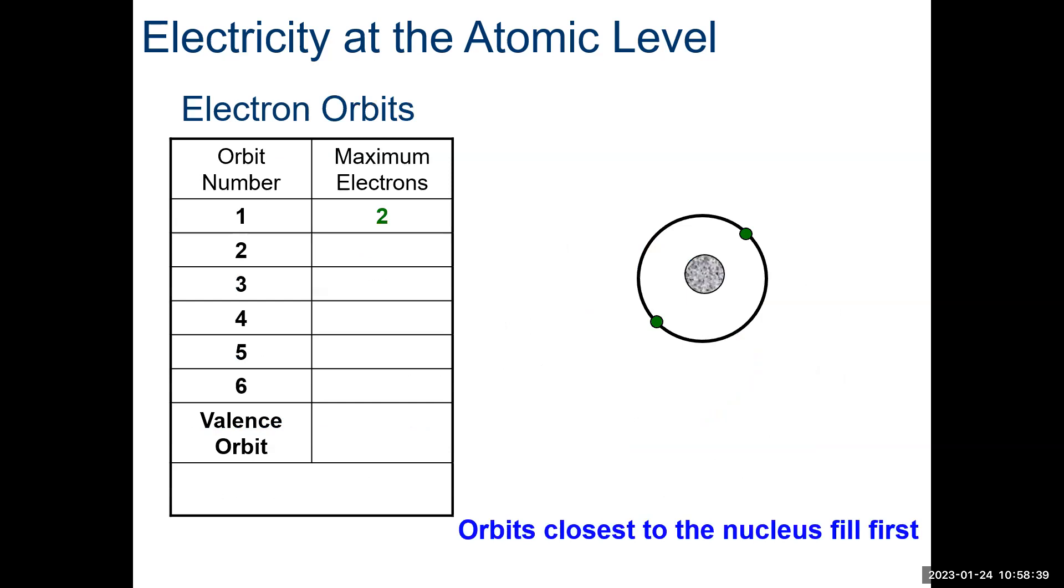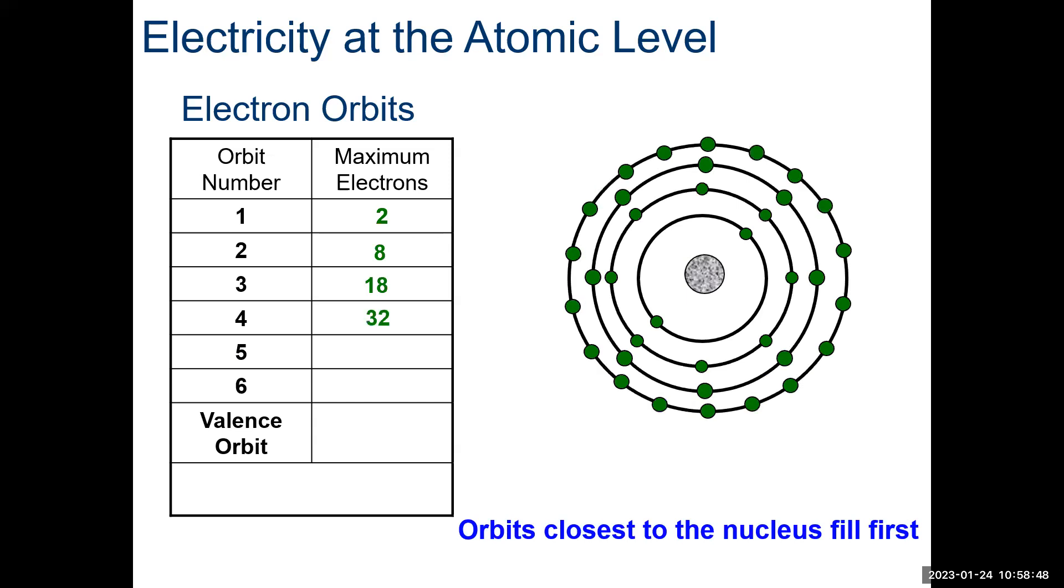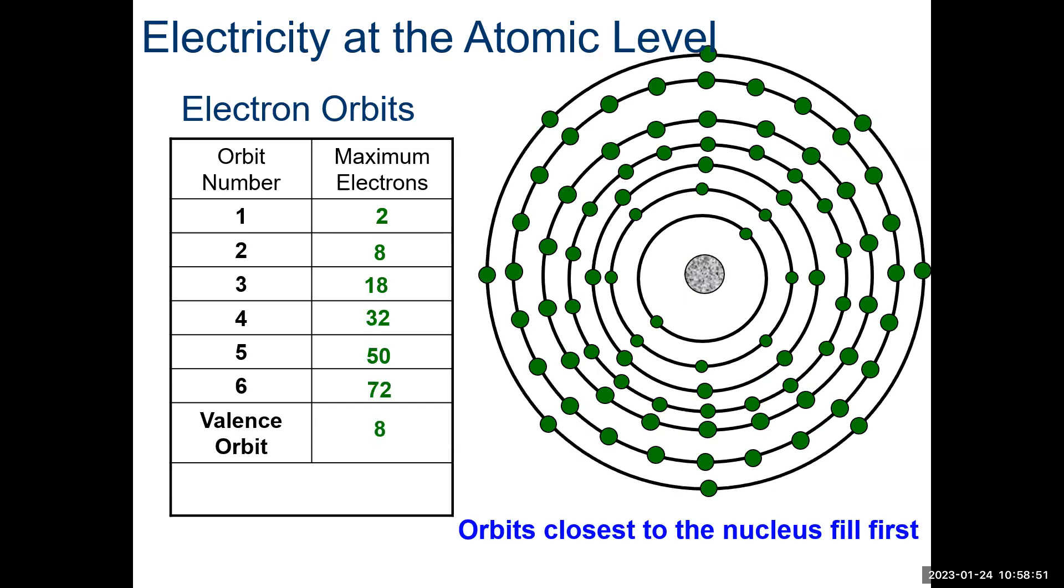All right. The way they work, electricity at the atomic level, electron orbits. Orbit number one, there's typically two. This is pretty common. I'll just toggle through, and then the valence orbit is the one that we're interested in, because that's the one that will move electricity through the conductor, or not move it if it's a non-conductor. Orbits start closest to the nucleus, and then head out, and the last ring is the valence orbit.